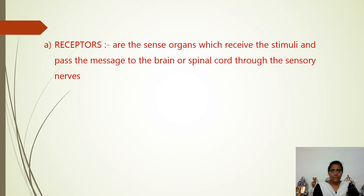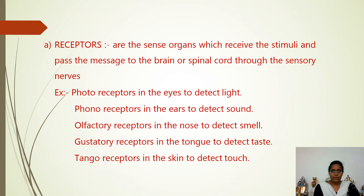The next key term is receptors. Receptors are the sense organs which receive the stimuli and pass the message to the brain or spinal cord through the sensory nerves. Receptors are of various types: photoreceptors present in the eyes to detect light, receptors in the ears to detect sound, olfactory receptors in the nose to detect smell, gustatory receptors in the tongue to detect taste, and receptors in the skin to detect touch.